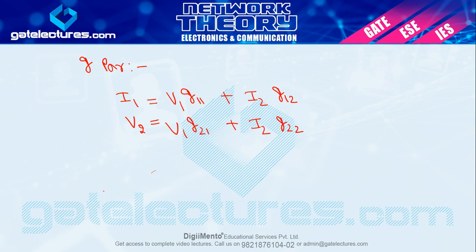यह होता है आपका h and g parameter. इसके सारे numericals ABCD parameter finish होने के बाद study करेंगे. Next video में हम ABCD यानी transmission parameter study करेंगे. Good bye.